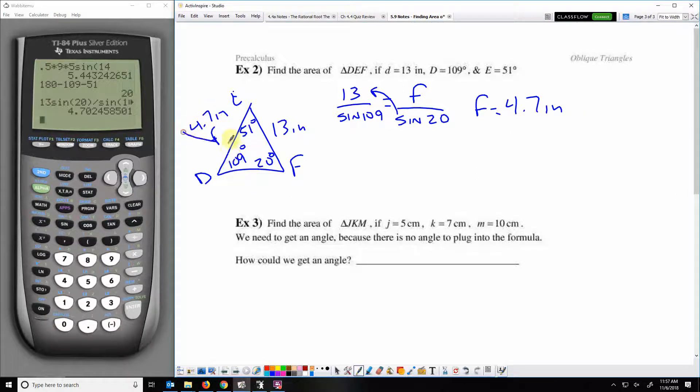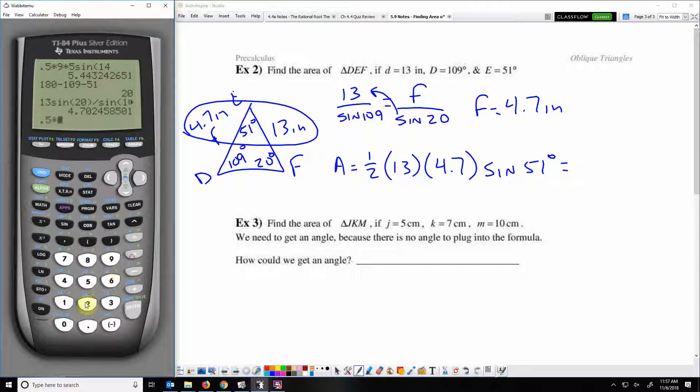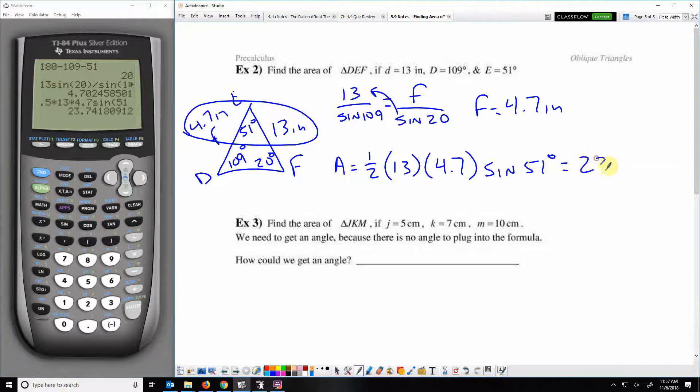Now right there, we have side-angle-side. The area is one-half times one side times another times sine of the included angle. We get an area of about 23.74 inches squared.